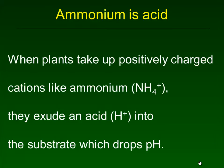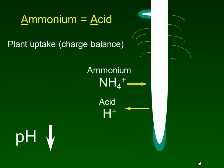Of those nitrogen forms, ammonium is acidic. When plants take up a positively charged cation like ammonium (NH4+), the roots exude an acid H+ into the substrate, which drops pH. You can see ammonium getting taken up by the root — that makes the root more positively charged and the soil around it more negatively charged. To balance this — called charge balance or electroneutrality — the plant puts out an acid: a plus going in (ammonium), a plus going out (acid), and pH goes down.